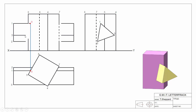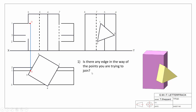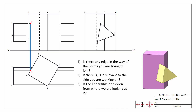Now for finding our line of interpenetration from edge one to edge two, there's a fail-safe procedure with three questions. First: is there any edge in the way of the points you're trying to join? Second: if there is, is it relevant to the side you're working on? Third: is the line visible or hidden from where we're looking? These three questions really help you build up the question point by point in a logical way without having to visualize the full solution at the start.